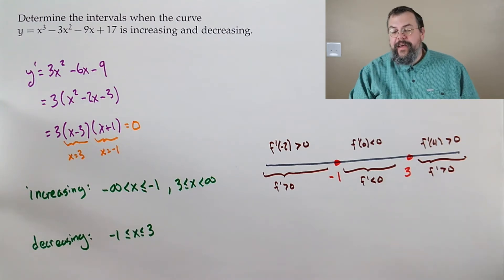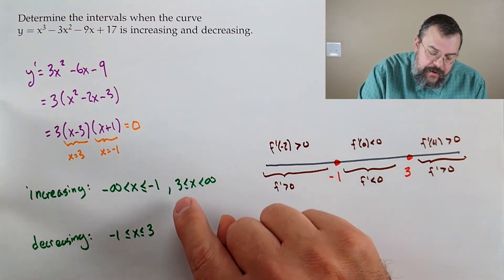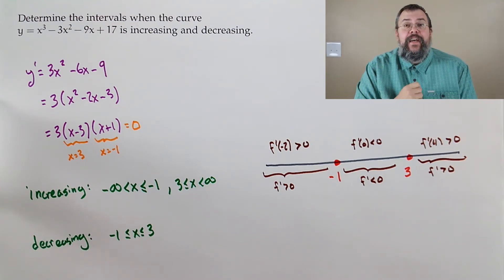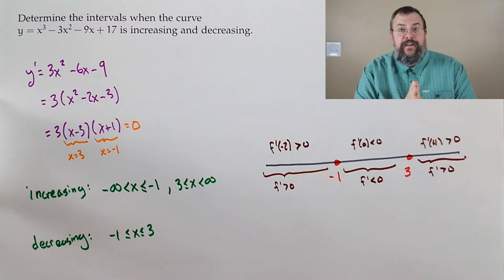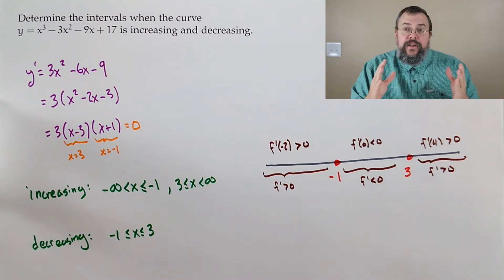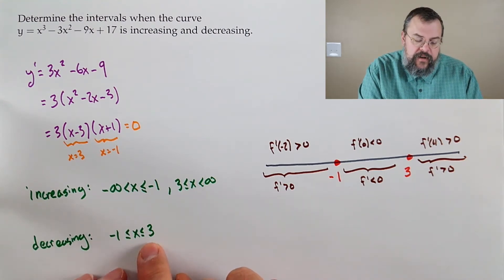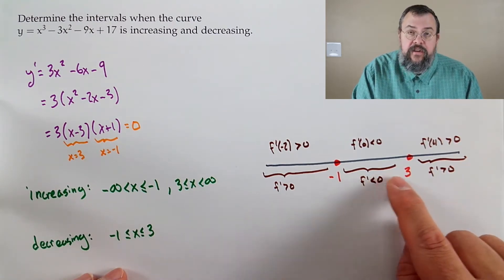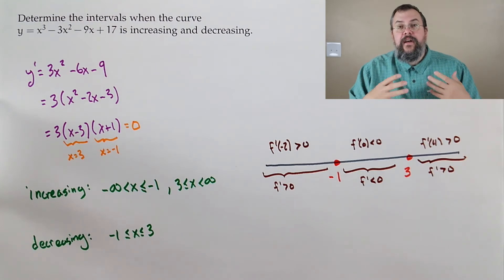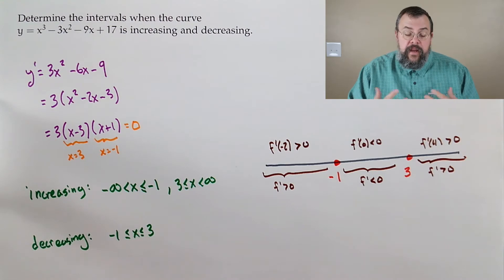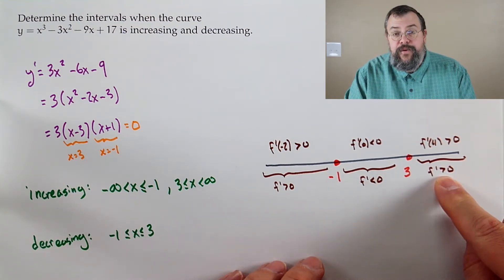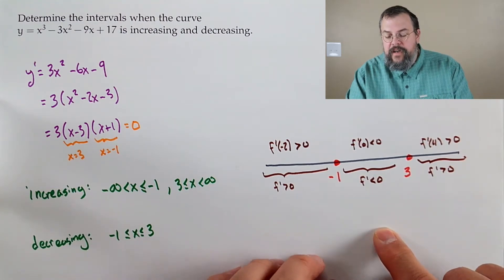You might be uncomfortable that 3 appears in both the decreasing and increasing intervals — how can a point be both? The answer is: increasing and decreasing is about intervals, because you have to make comparisons. We have one type of behavior to the left of 3 and another to the right. Including 3 in both intervals is valid. This actually tells us something: at 3 we go down then up, so 3 is a min; at negative 1 we go up then down, so negative 1 is a max.